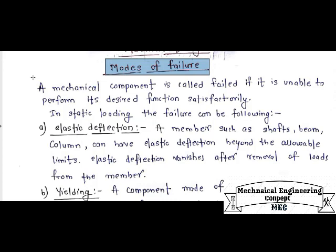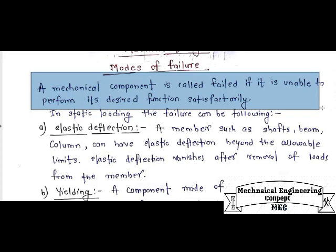A mechanical component is said to fail if it is unable to perform its desirable function. Whenever a mechanical component or machine element is unable to perform its basic function — for which it is designed, manufactured, or analyzed — it cannot be said to have a desired function. For static loading conditions, three basic types of failure can occur.